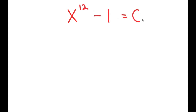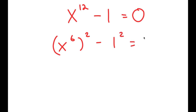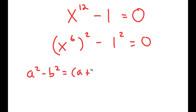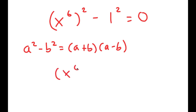In this video, I'm going to solve the equation x to the power of 12 minus 1 is equal to 0. To solve this, I'm going to first rewrite this as x to the power of 6 squared minus 1 squared is equal to 0. The reason I'm doing this is so I can use the property a squared minus b squared equals a plus b times a minus b. So this turns into x to the power of 6 plus 1 times x to the power of 6 minus 1 is equal to 0.